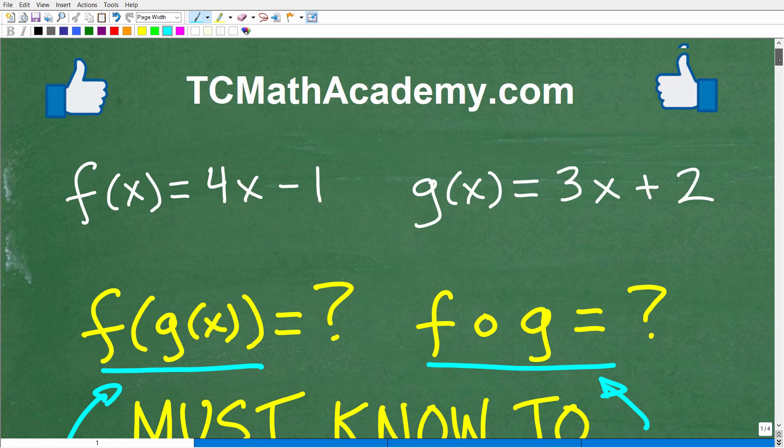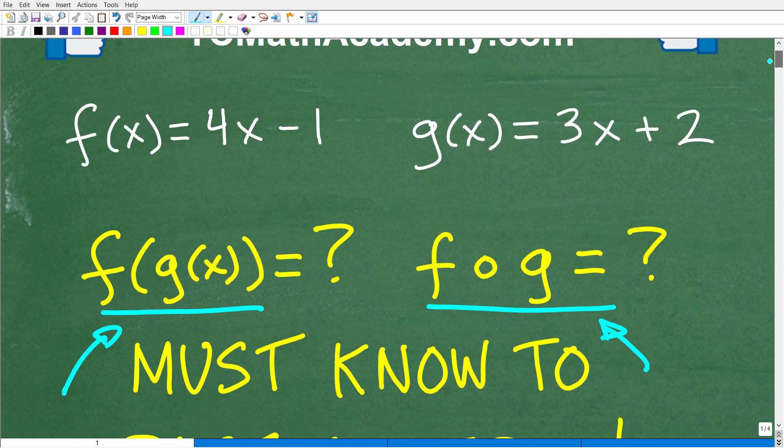Let's see if you can do this problem right here. So I have two functions. I have f(x) is equal to 4x minus 1 and g(x) is equal to 3x plus 2.